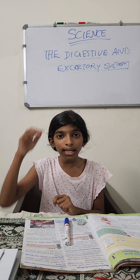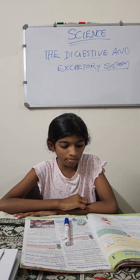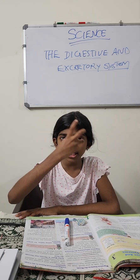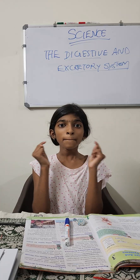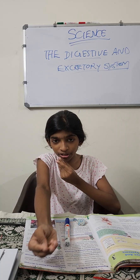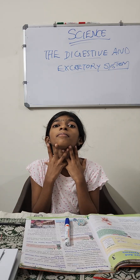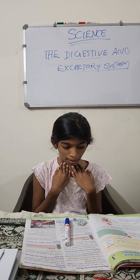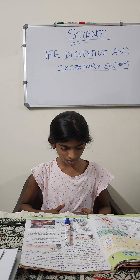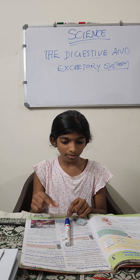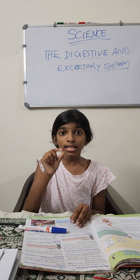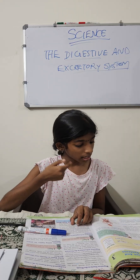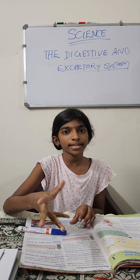The digestive system consists of the mouth, our food pipe, the stomach, the small intestine, and the large intestine. We then go to the rectum and the anus — that is the digestive system.